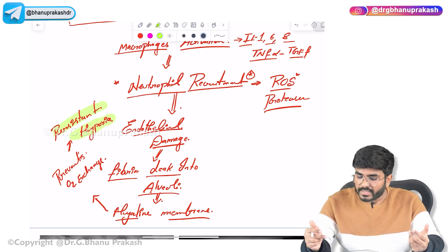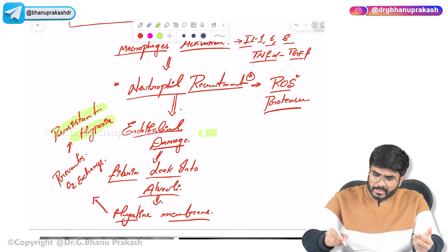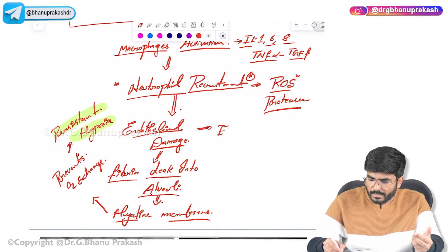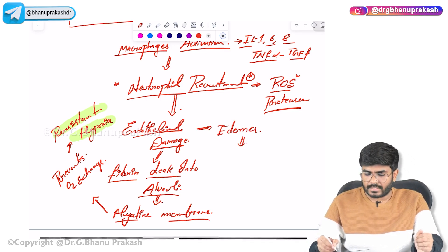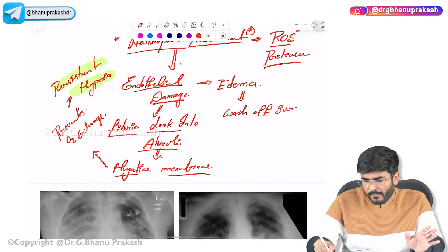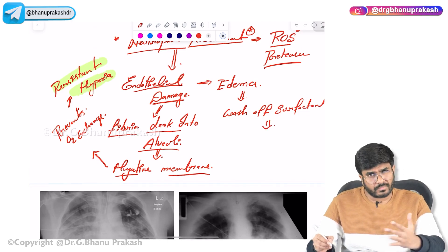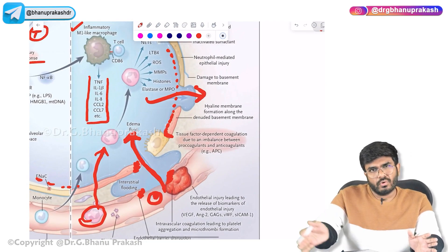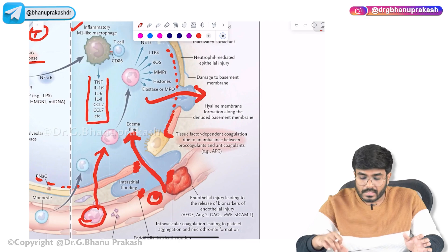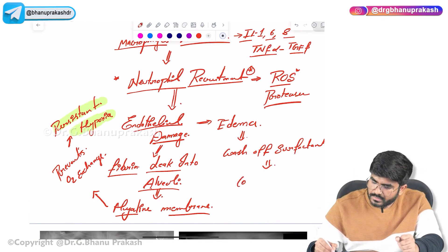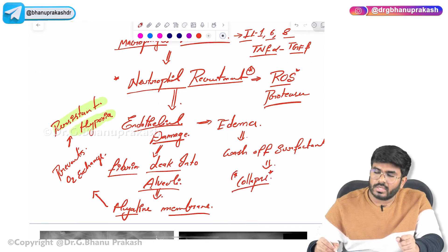Because of the endothelial damage there is also edema — fluid is entering into the lungs. This edema is going to wash off the surfactant. When the surfactant is washed off, the lungs will become collapsed — they will undergo atelectasis. So surfactant washout causes collapse, leading to respiratory distress.